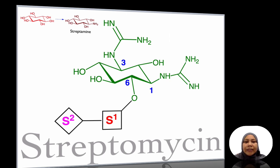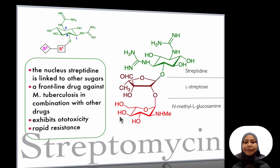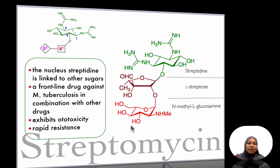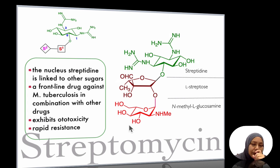For streptomycin, the streptidine aglycone is linked to L-streptose and N-methyl glucosamine. It was actually the first drug against Mycobacterium tuberculosis, but it must be used in combination with other drugs. It exhibits ototoxicity, similar to other aminoglycosides, and it can also lead to rapid resistance in bacteria.